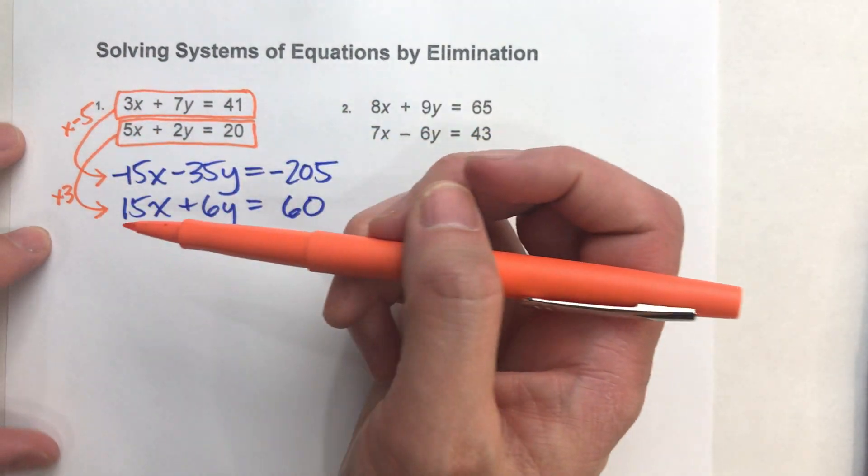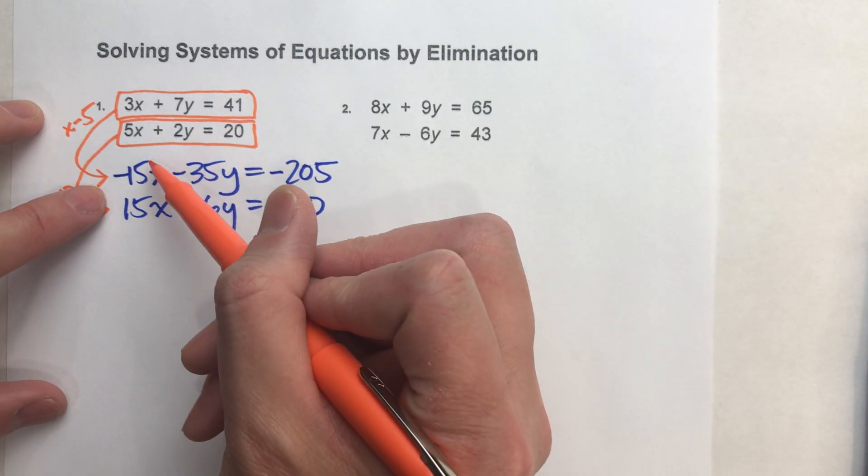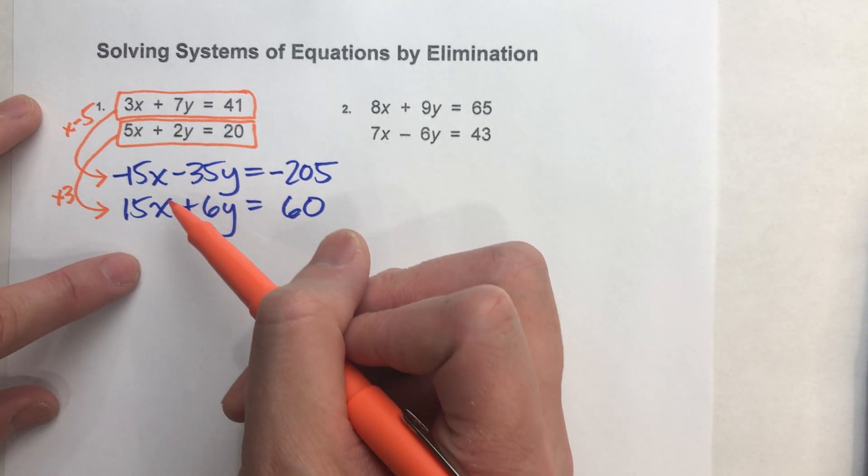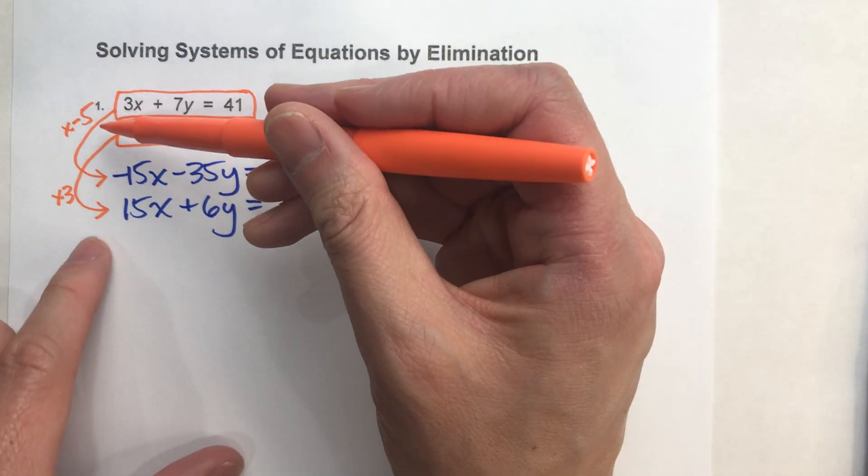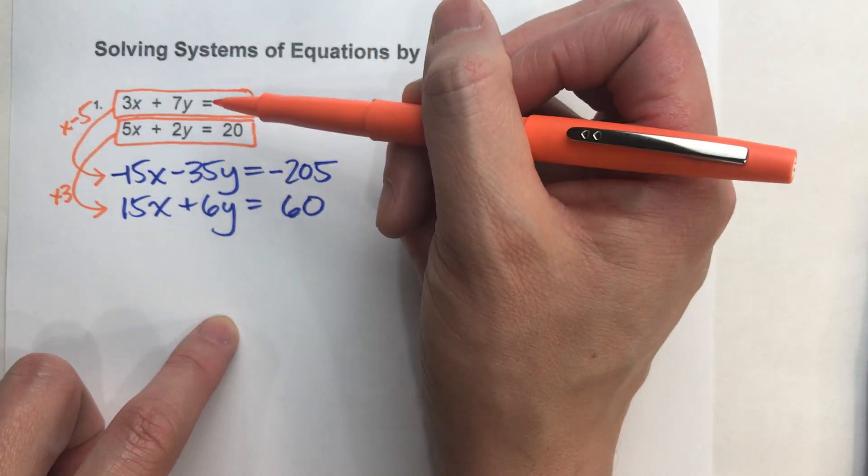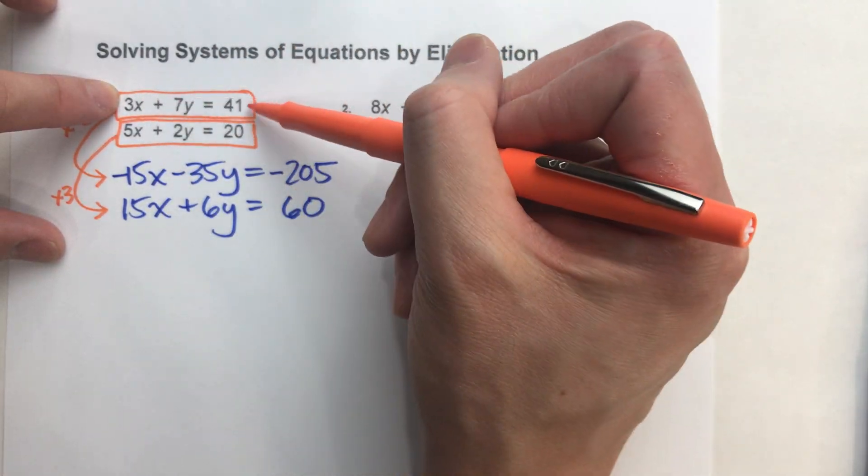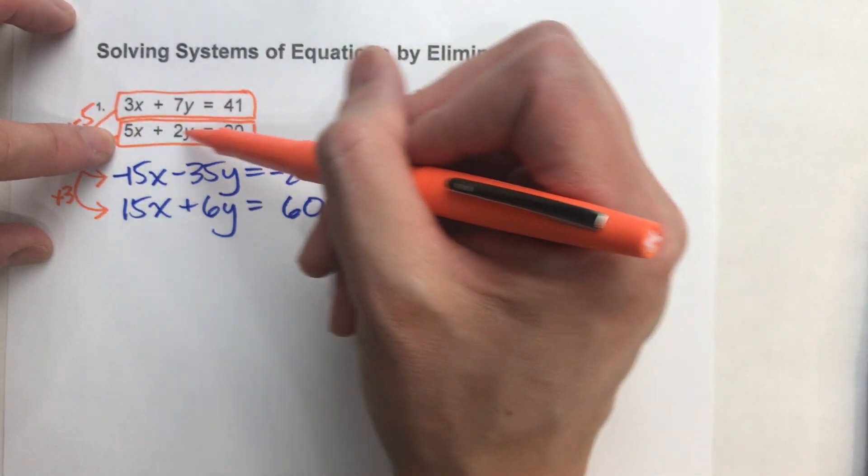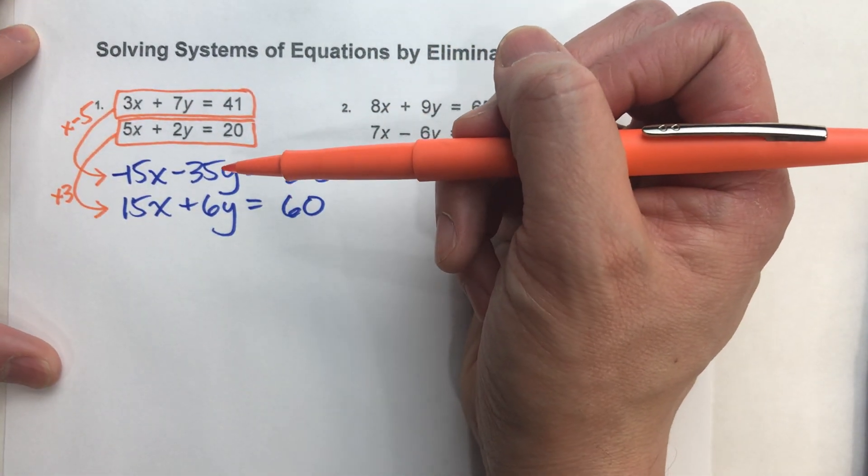But now you can see why I multiplied the numbers by what I did. Because notice, I've got my negative 15x here and my positive 15x there. Now, could I have multiplied it by something to match up the y's instead? Definitely. I could have done that. I could have multiplied this top one by negative 2 and the bottom one by positive 7. So I would have had negative 14y and positive 14y. It's your choice.